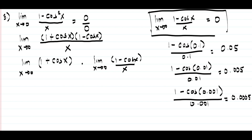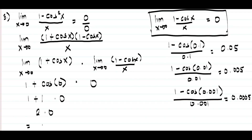Using this to simplify, we get (1 plus cosine 0) times 0. The value of cosine 0 is 1, so we have (1 plus 1) times 0, which is 2 times 0, and our answer is 0.